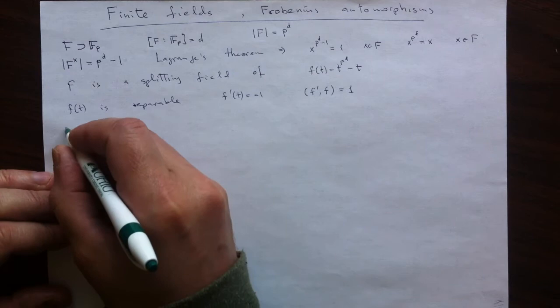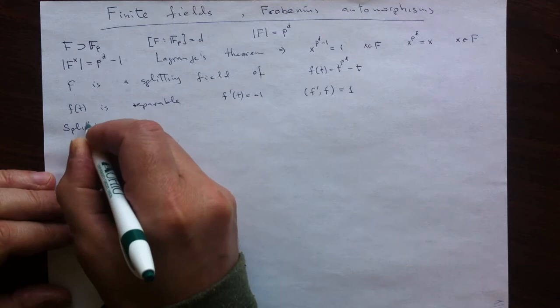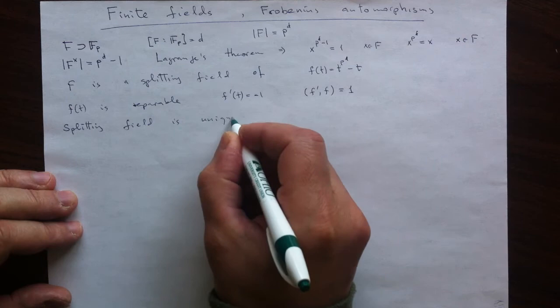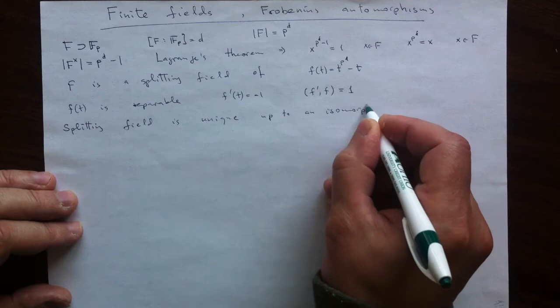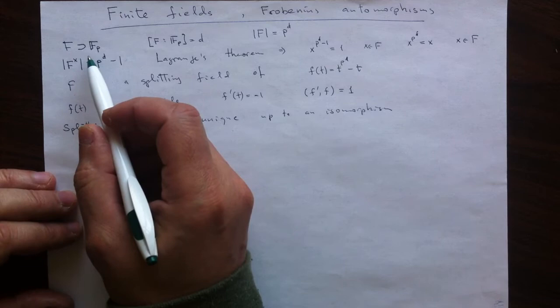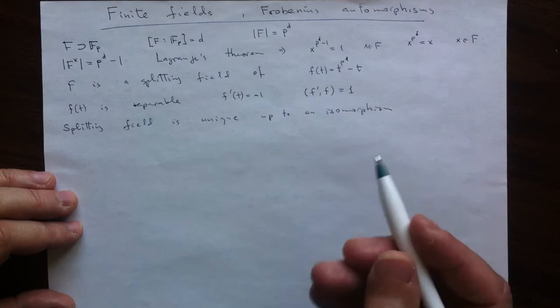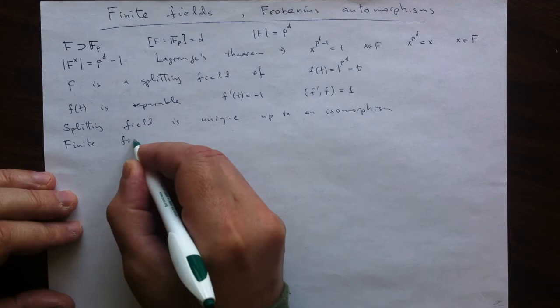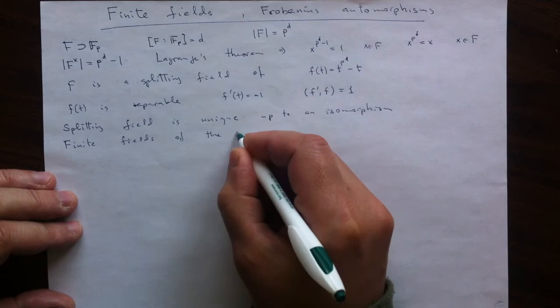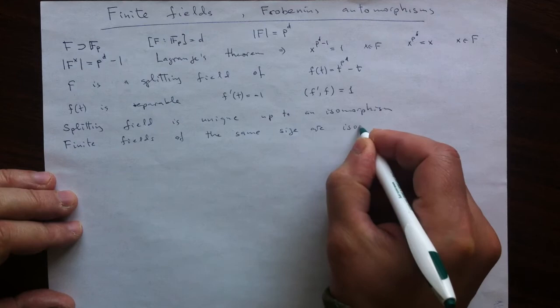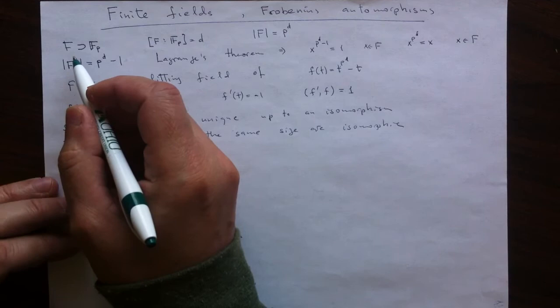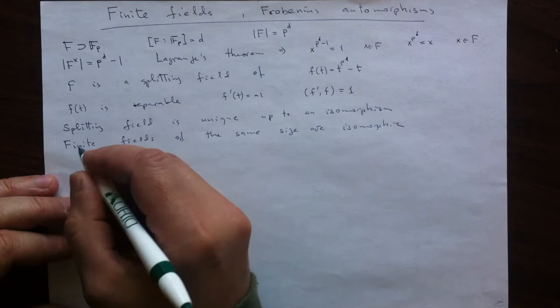And we checked before that splitting fields are unique up to an isomorphism. Up to an isomorphism. And what we started with is an arbitrary finite field of a given number of elements. And we ended up that it should be unique up to an isomorphism. So finite fields of the same size are isomorphic.